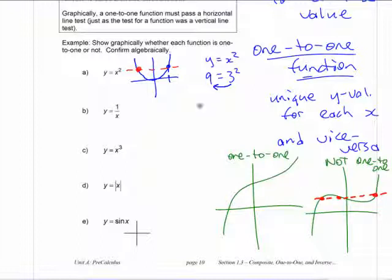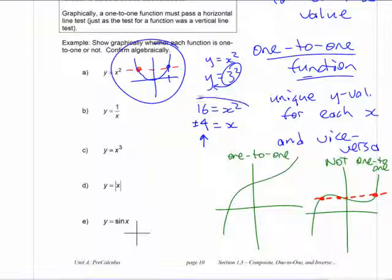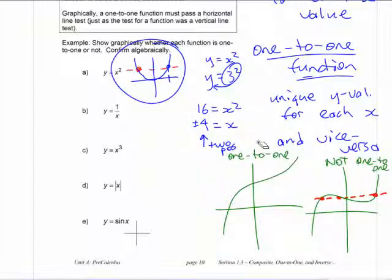If you put in an x value and see what y value you get, you only get one. But if you do the reverse — if you put 16 in and solve for x — you get plus or minus four, right? x is plus or minus four. There are two different values. So from the graph and from the algebra, you can tell it's not one-to-one because there are two possible x values that go with y equals 16.